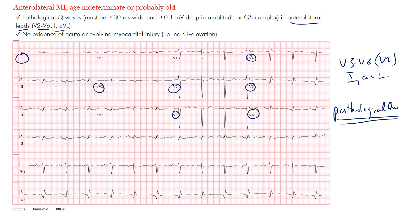You have to be careful not to confuse small Q waves with pathological findings, because some Q waves are normal. They can be seen during interventricular septal depolarization. The left bundle branch initiates the depolarization across the interventricular septum from left to right, so leads positioned on the left side will see a negative deflection — which is expected.